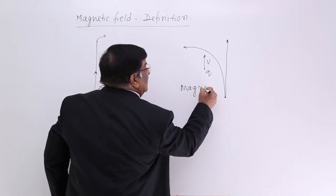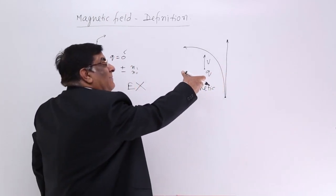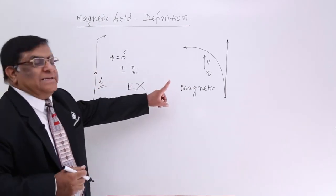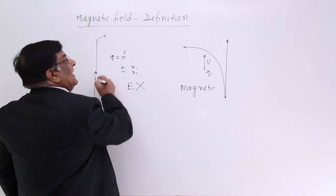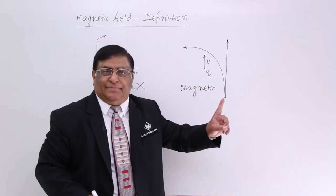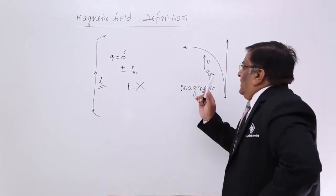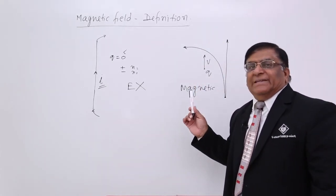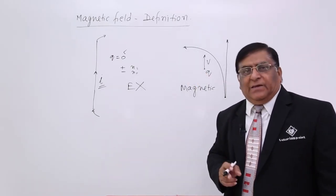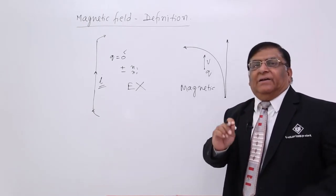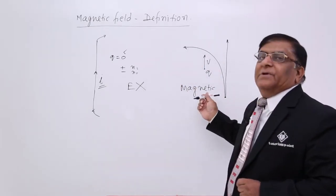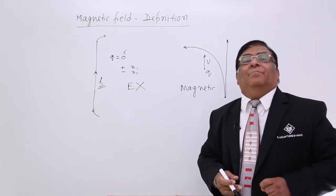We have also seen that if we place a magnetic needle near the conductor, that magnetic needle also moves — that is proof that the field created by electric current is magnetic field. When electric current flows, it changes the direction of a moving charge, and this phenomenon gives us the definition of magnetic field. A magnetic field is the field which is able to change the direction of a moving charge — it is that property in space which changes the direction of a moving charge.